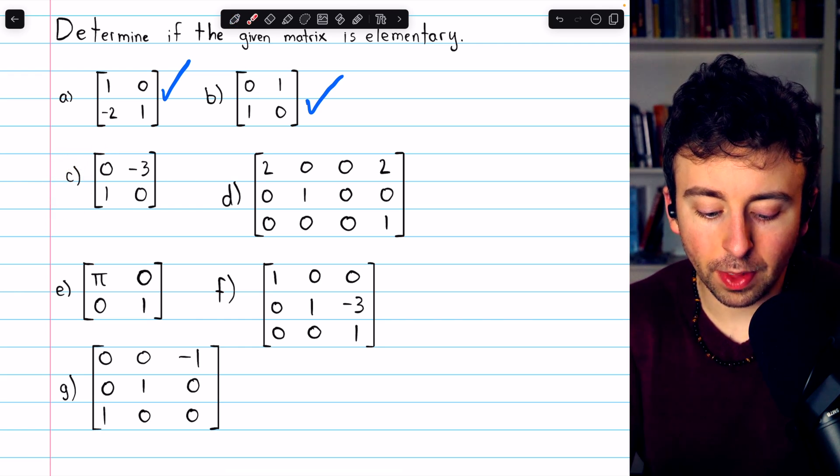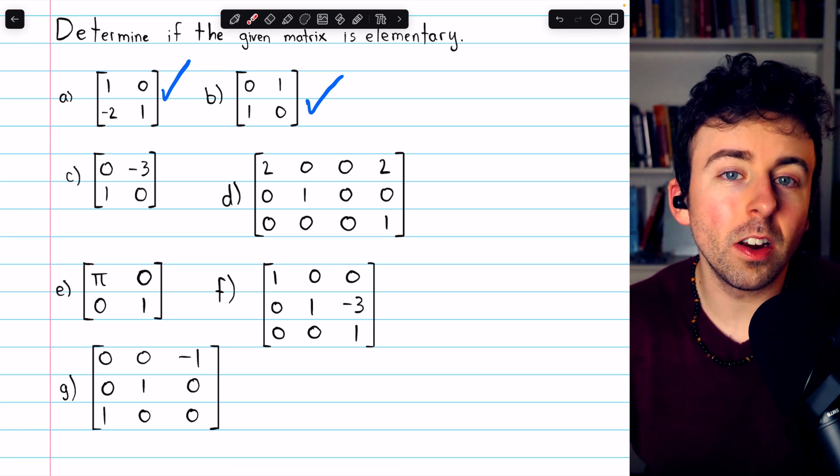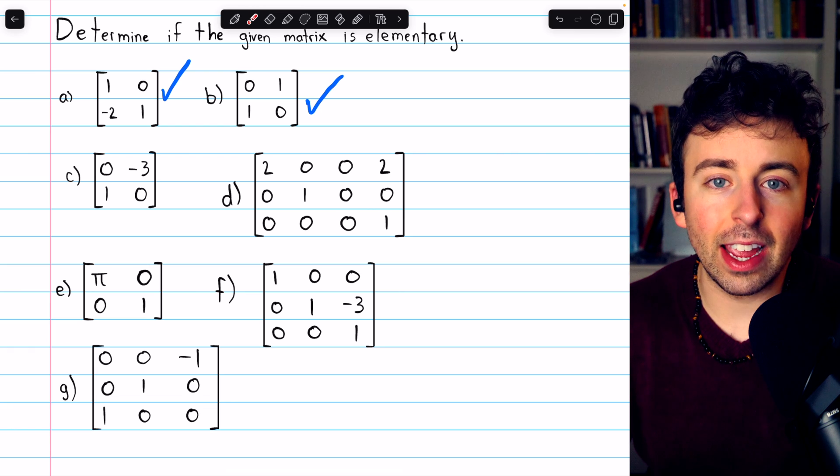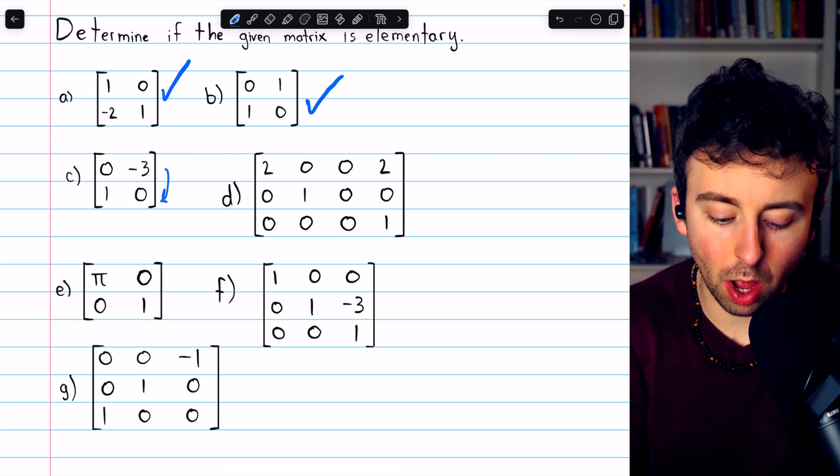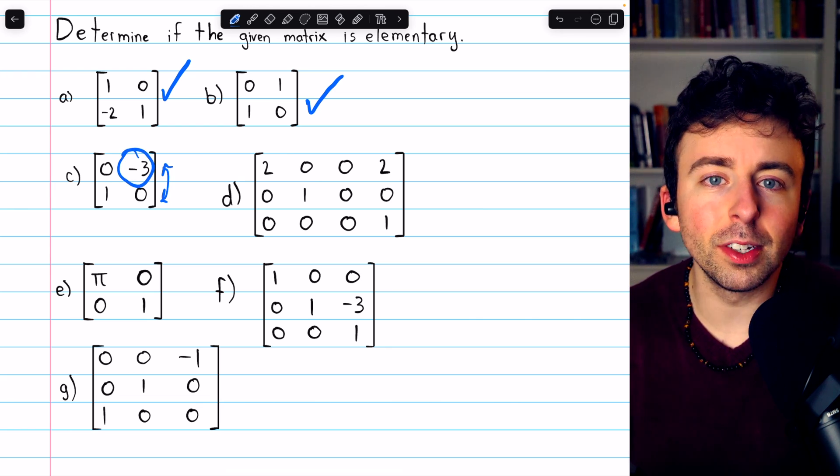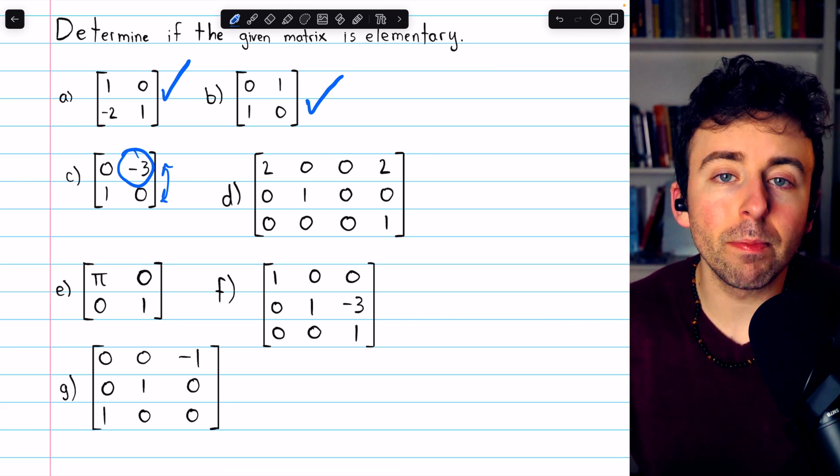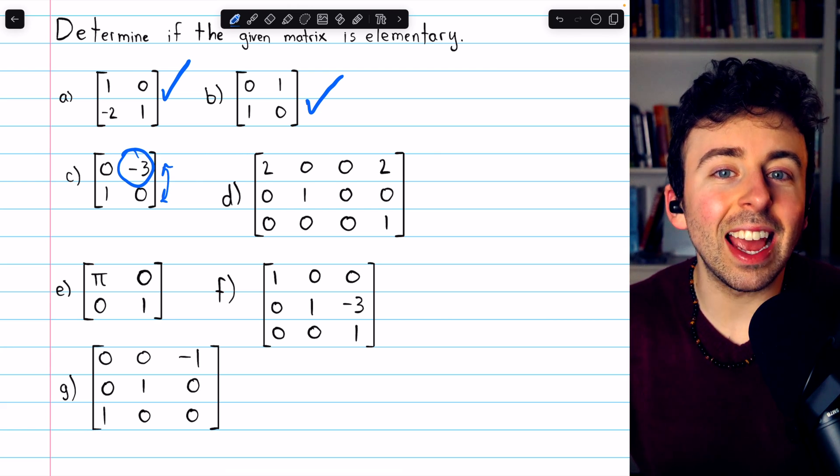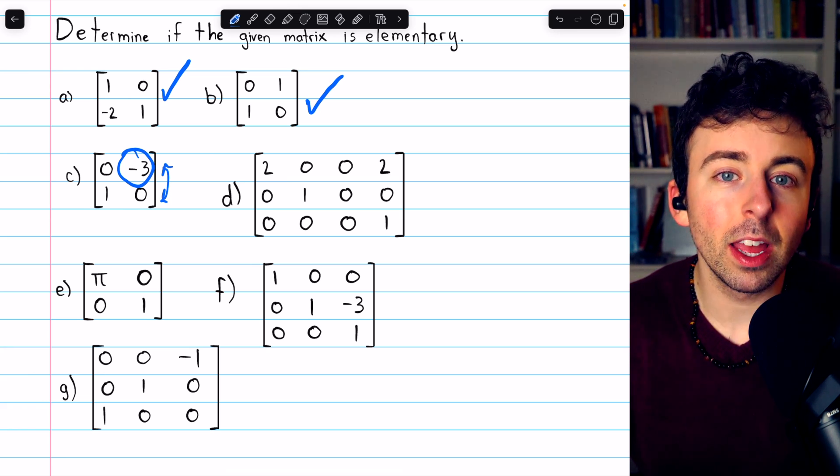Now, what about letter C? The first entry in row 1 is 0, not 1, so we know that a swapping must have taken place. Rows 1 and 2 must have been swapped. But also, the second entry in row 1 is not 1 either, so this means that it must have been multiplied by something, which is a second row operation. It was multiplied by negative 3.